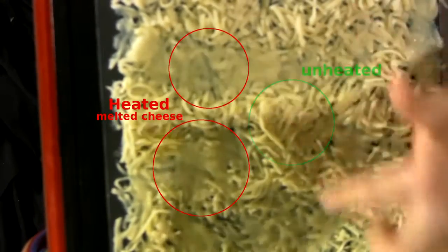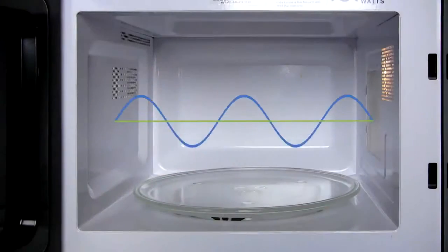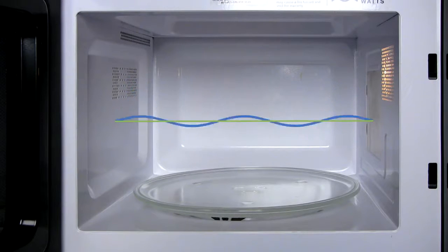You can see on here sections where the cheese is completely melted, and other sections where it's completely unheated. The oven's metal walls only reflect waves of a length that fits inside the oven. This standing wave causes hot and cold spots inside the oven.